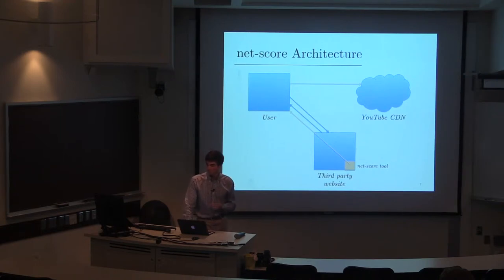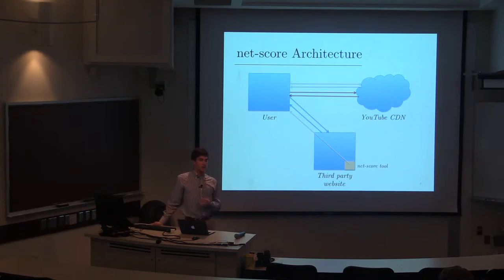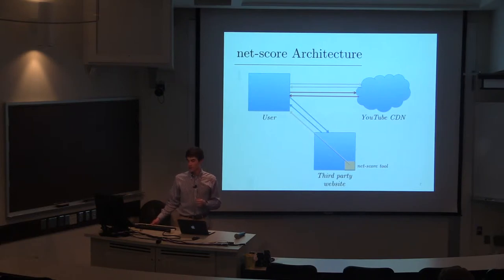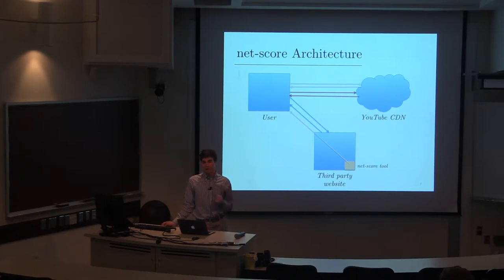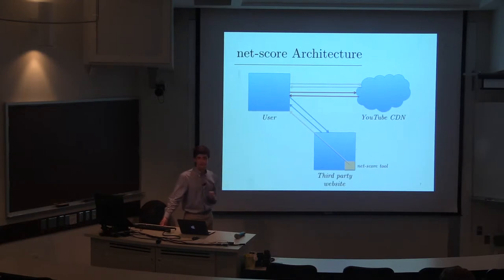Due to the W3 standard, HTML is rendered sequentially, so the NetScore tool is retrieved last. Once the NetScore tool is retrieved, we issue a GET request for a very small image located on YouTube's CDN. We get the image back and time it using the wall clock to account for any I/O on the server side. Then we issue another request for a larger image, apply the same wall clock timing but correct for the handshake delay, and divide the file size by the time it takes to retrieve it — giving us a throughput measurement.